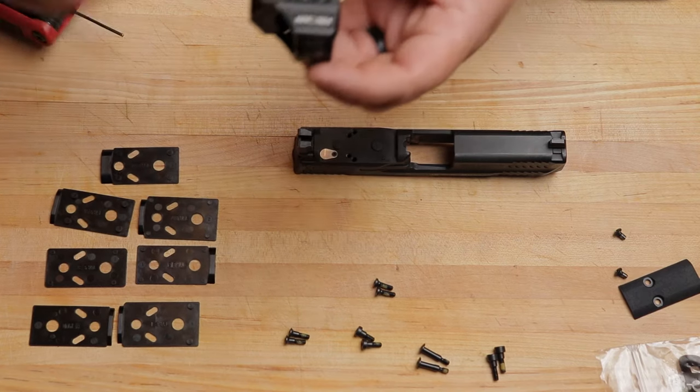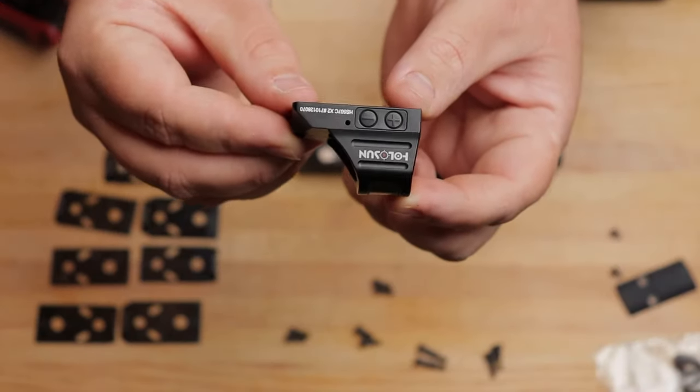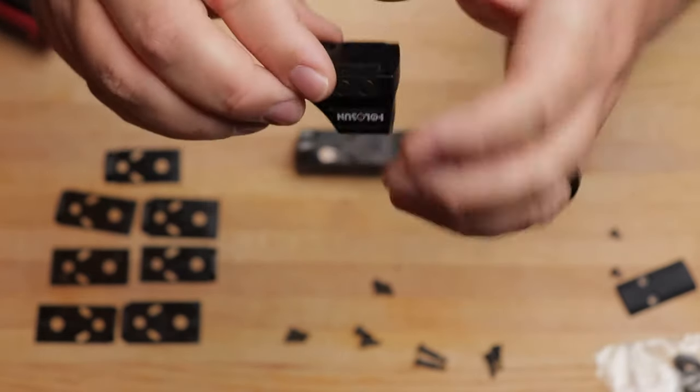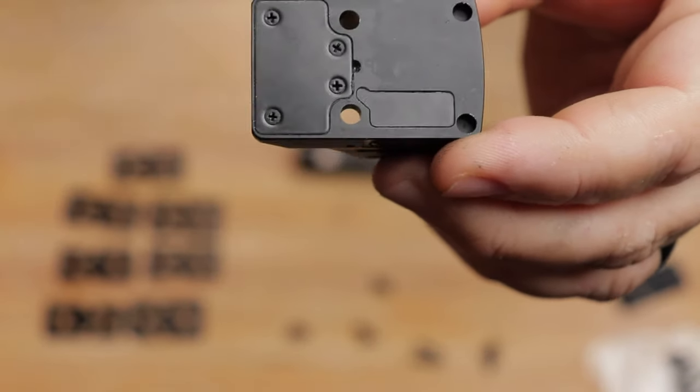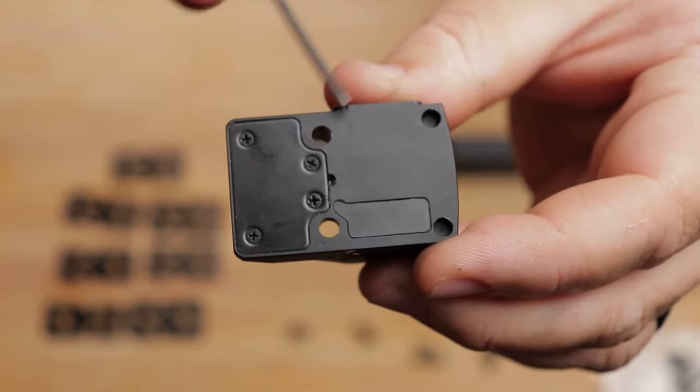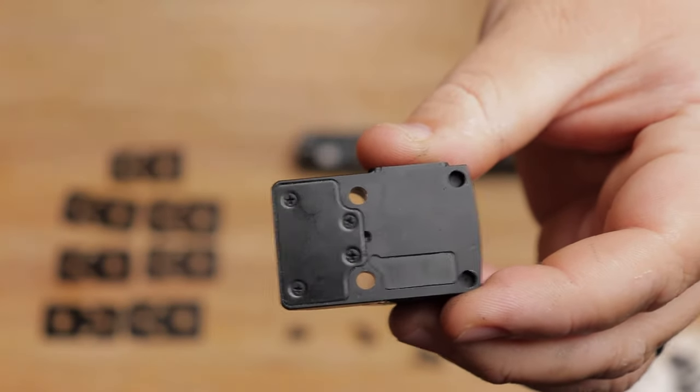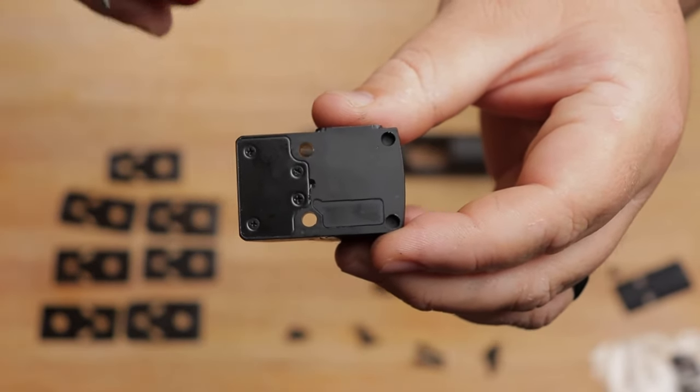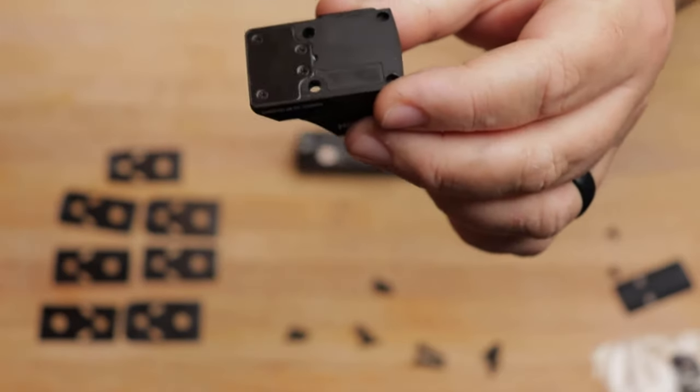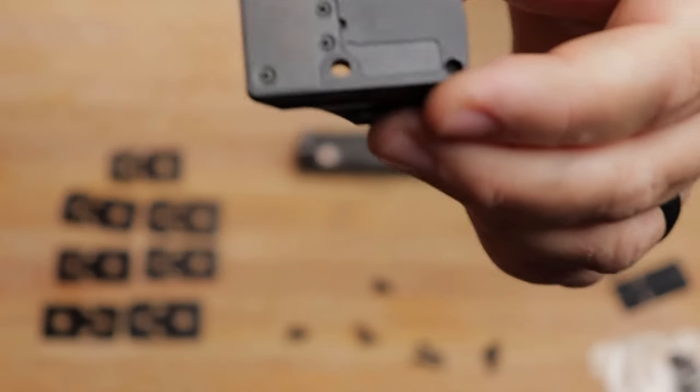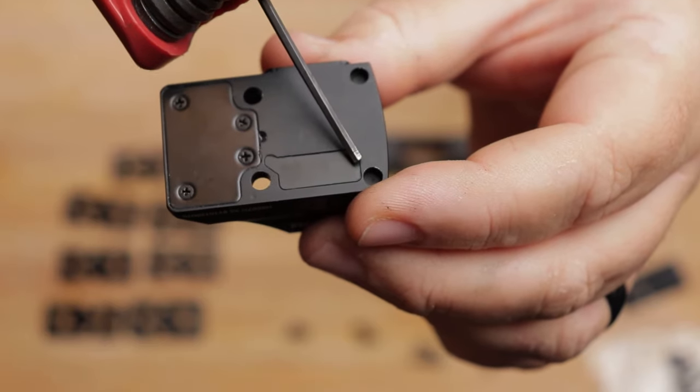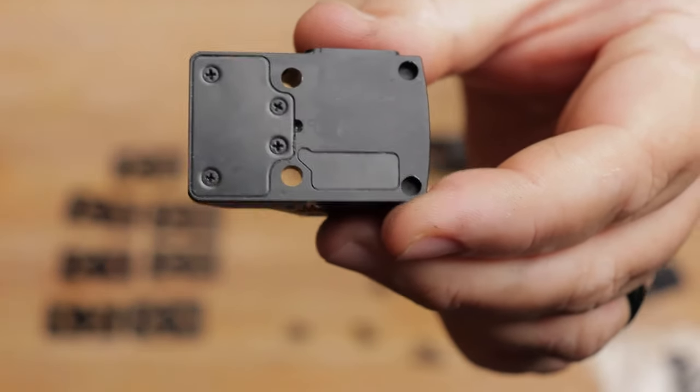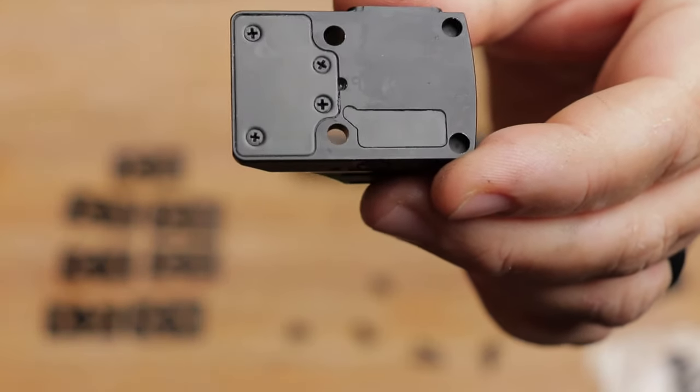And now, the important part here. We have our optic. I'm gonna be mounting the Holosun 507C X2. And if you look on the bottom here, you'll see this bottom surface is what's called the footprint. Now, not all pistol optics share the same footprint. There's not a universal standard that all pistol optics follow, but some do share with each other.